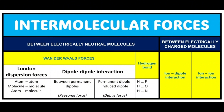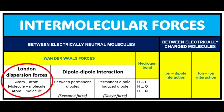Van der Waals forces have two sub-types: London dispersion forces and dipole-dipole interaction. Dipole-dipole interaction can occur between permanent dipoles and permanent dipoles, or induced dipoles. London dispersion forces occur between atoms, molecules, or atoms and molecules. Hydrogen bond occurs between hydrogen of one molecule and a highly electronegative element — fluorine, oxygen, or nitrogen — of another molecule.